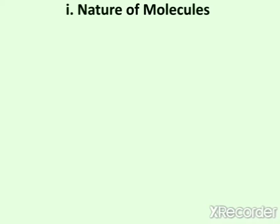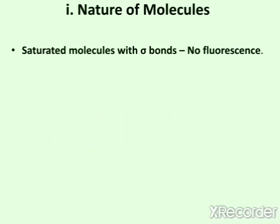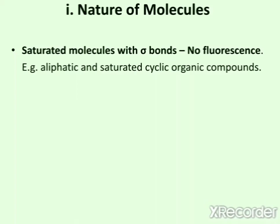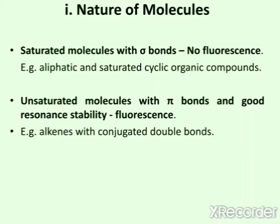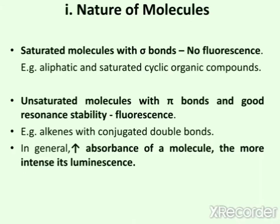For any compound to have fluorescence, it should have the tendency to absorb electromagnetic radiation. Saturated molecules with sigma bonds do not exhibit fluorescence — for example, aliphatic and saturated cyclic organic compounds. Unsaturated molecules with pi bonds and good resonance stability can exhibit fluorescence; examples include alkenes with conjugated double bonds. In general, the greater the absorbance of a molecule, the more intense its luminescence.